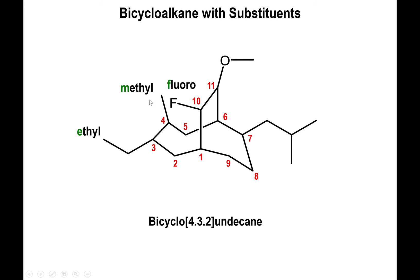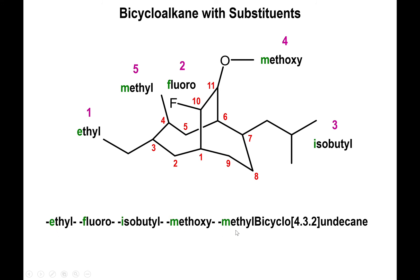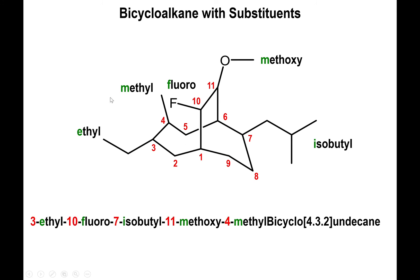The substituents on this molecule are: an ethyl group, a methyl on the back, a fluoro on top, a methoxy group, and an isobutyl chain on the right side. Alphabetically, E comes first, then F, then I, then methoxy before methyl (since O comes before Y). So the order is: ethyl, fluoro, isobutyl, methoxy, methyl. Using the numbers from our scheme, we get: 3-ethyl, 7-fluoro, 10-isobutyl, 11-methoxy, and the corresponding number for methyl.